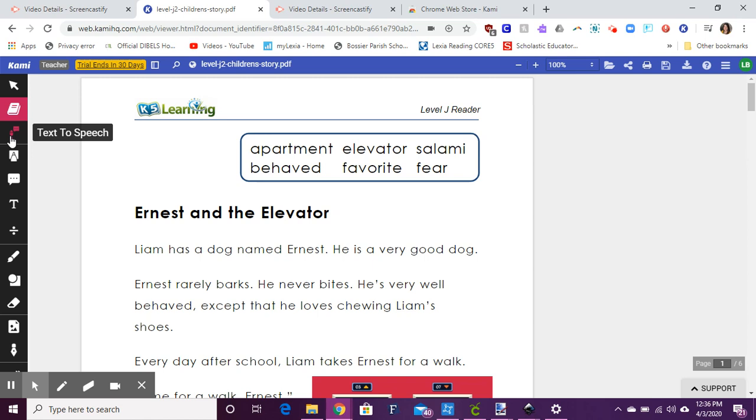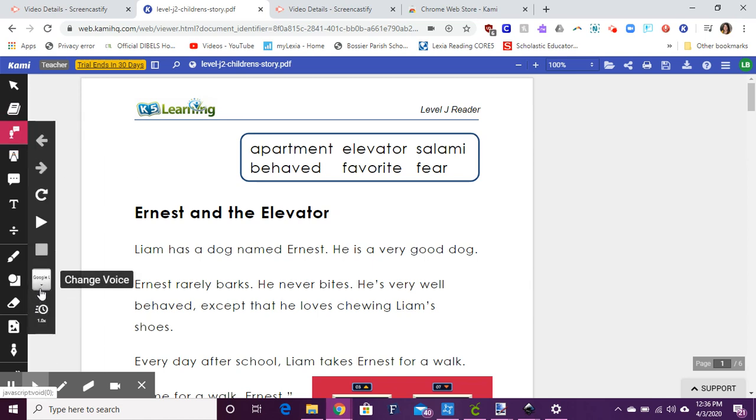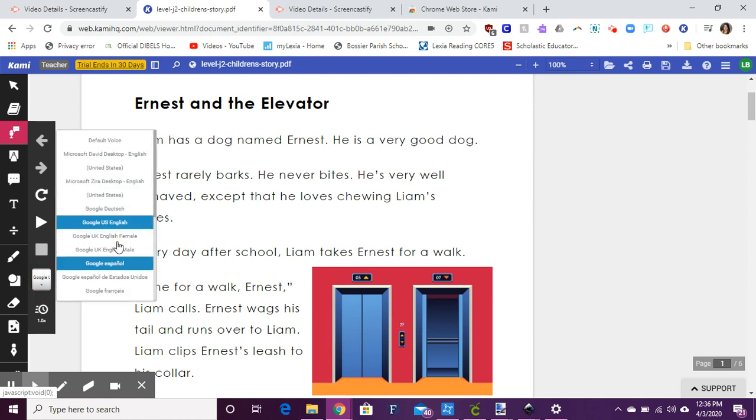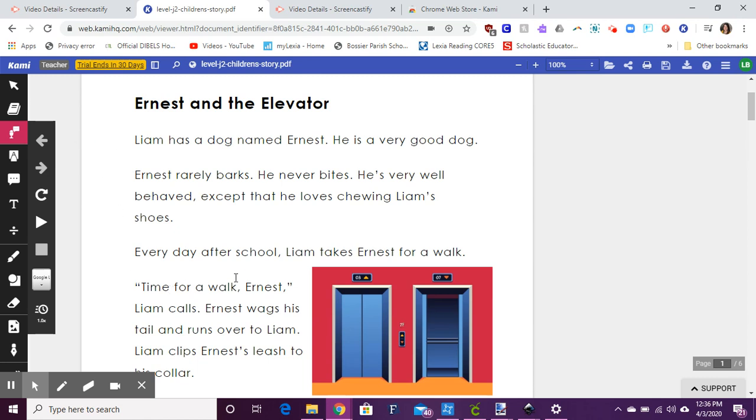The next one is text to speech so it will read something to you if you would like it read, or if there's a word you're not sure how to say you could have it read just one word. There are different languages here, it will automatically set up to this one. To me this Google US English is the easiest one for me to understand, so you may want to play around with that and see.